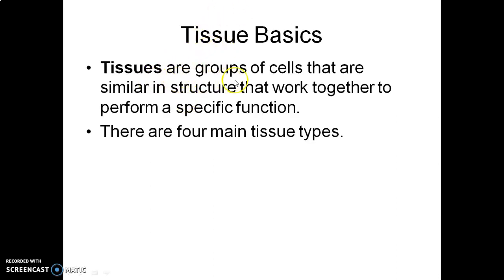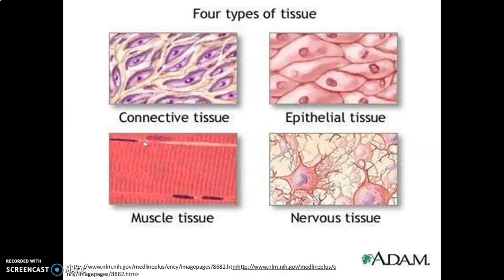Basically, tissues are groups of cells that are similar in structure and work together to perform specific functions. There are four main types of tissue: connective tissue, epithelial tissue, muscle tissue, and nervous tissue. These are the four major types of tissue.